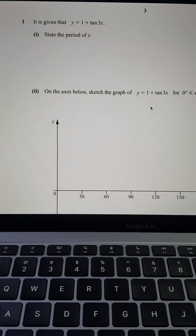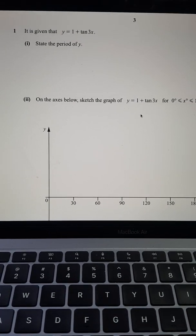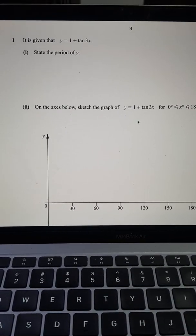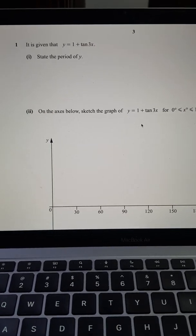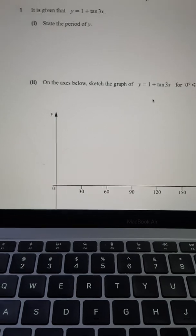You can see here it says it is given that y is equal to 1 plus tan 3x and you're supposed to find the period. So that's pretty simple. All you gotta do is since we know that the natural period of tan is 180, so we'll just take 180 and divide by 3. So that's equal to 60 degrees.